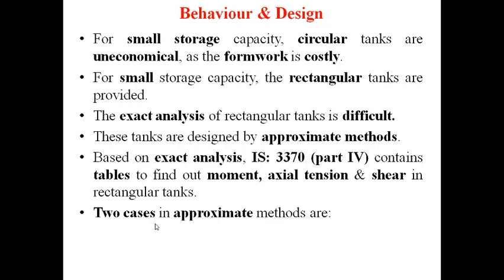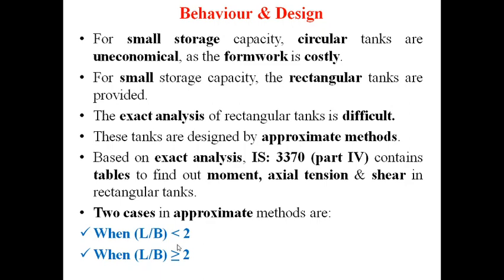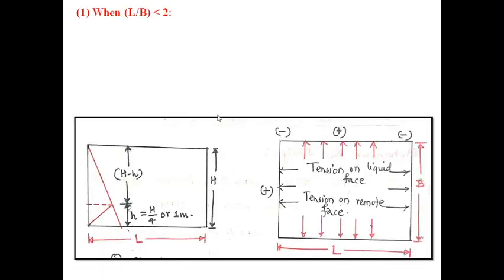Now the two cases in approximate methods of design of Rectangular Water Tanks are: Case 1, when length divided by width is less than 2, and Case 2, when length divided by width is greater than or equal to 2. Here, L and B are the inside clear dimensions of the Rectangular Water Tank — L stands for length and B is the width.